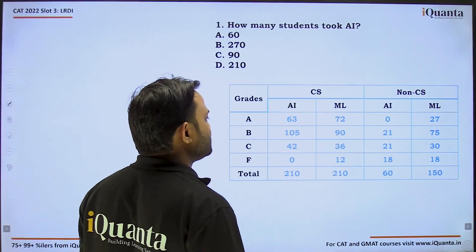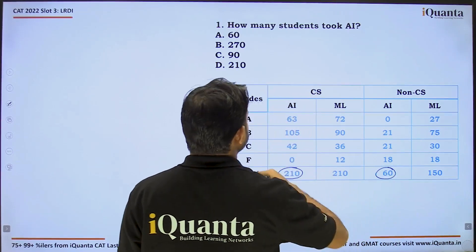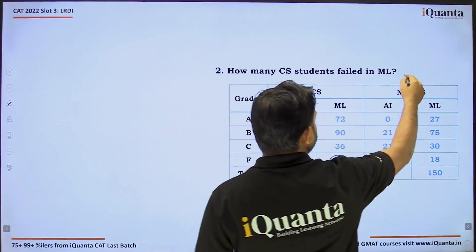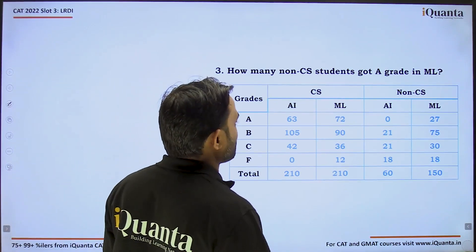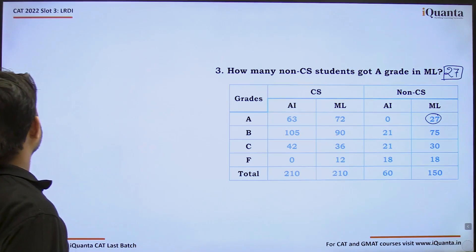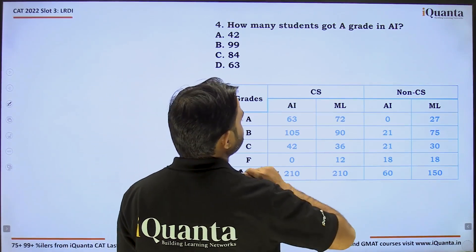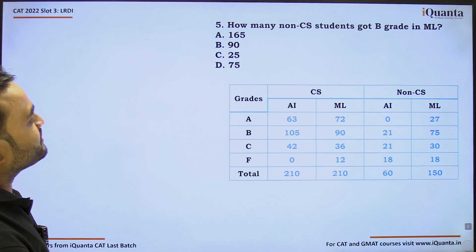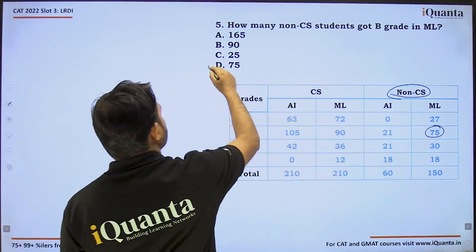Question 1: How many students took AI? Total = 210 plus 60 = 270. Option B is correct. Question 2: How many CS students failed in ML? That's 12. Question 3: How many non-CS students got A grade in ML? That's 27. Question 4: How many students got A grade in AI? That's 63 plus 0 = 63. Option B is correct. Question 5: How many non-CS students got B grade in ML? That's 75. Option B is correct.